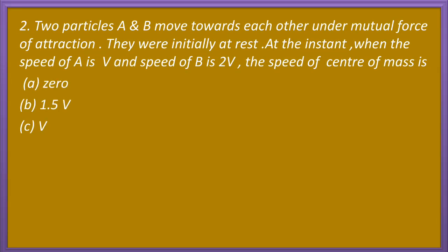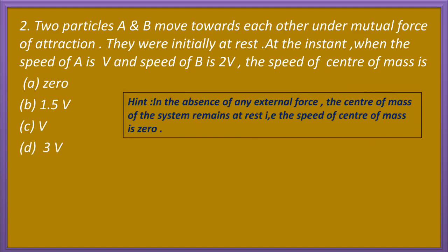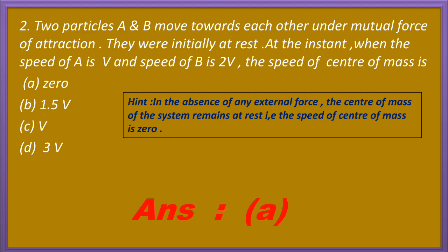Question 2. Two particles A and B move towards each other under mutual force of attraction; they were initially at rest. At the instant when the speed of A is V and speed of B is 2V, the speed of center of mass is: 0, 1.5V, V, or 3V? In the absence of any external force, the center of mass of the system remains at rest, so the speed of center of mass is 0. The correct answer is option A.